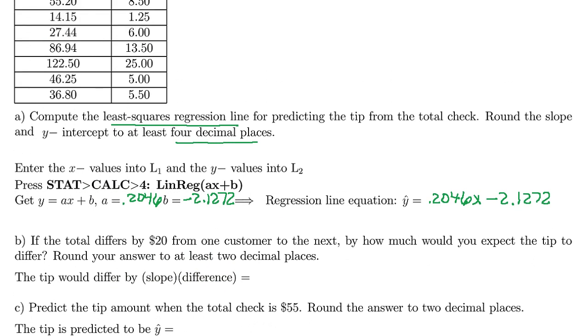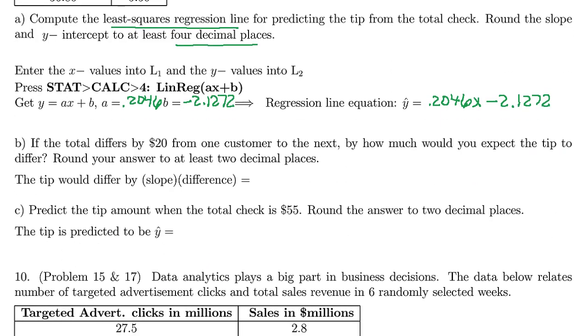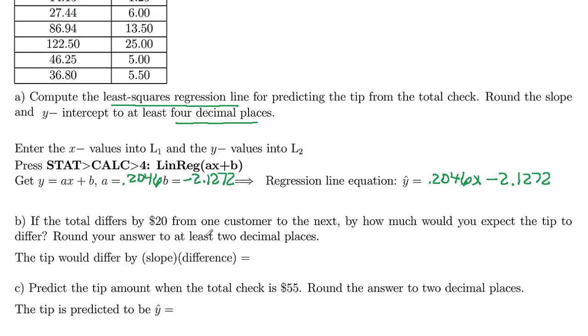So now they ask us, well, let's suppose that your total tip here differs by $20 from one customer to the next. By how much would you expect the tip to differ? Round your answer to two decimal places. So your tip is going to differ by the amount of the slope times the amount of the difference. So the difference they gave us is $20. Our slope is 0.2046. So we're going to take 0.2046 and we are going to multiply that by 20.